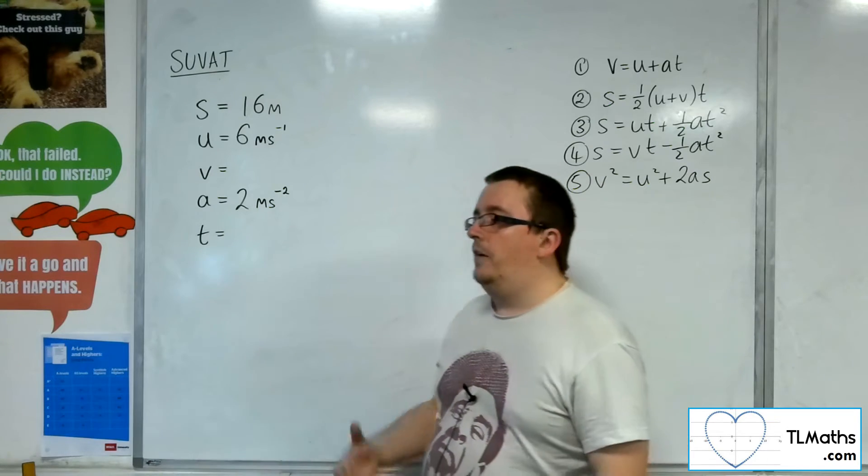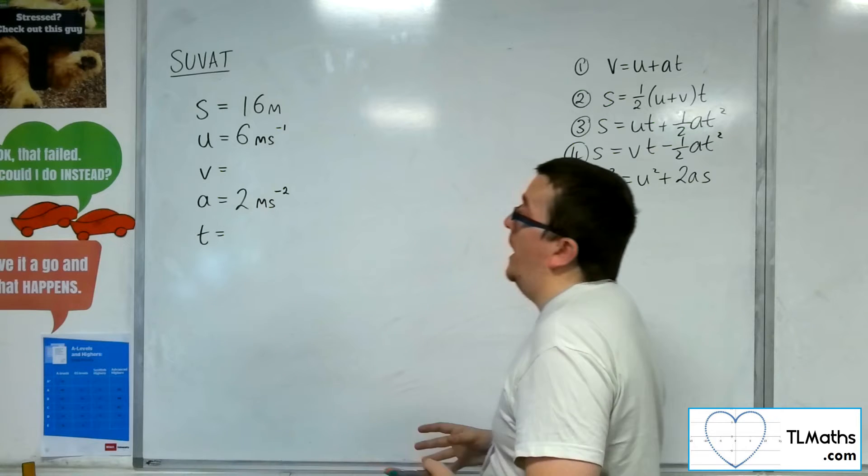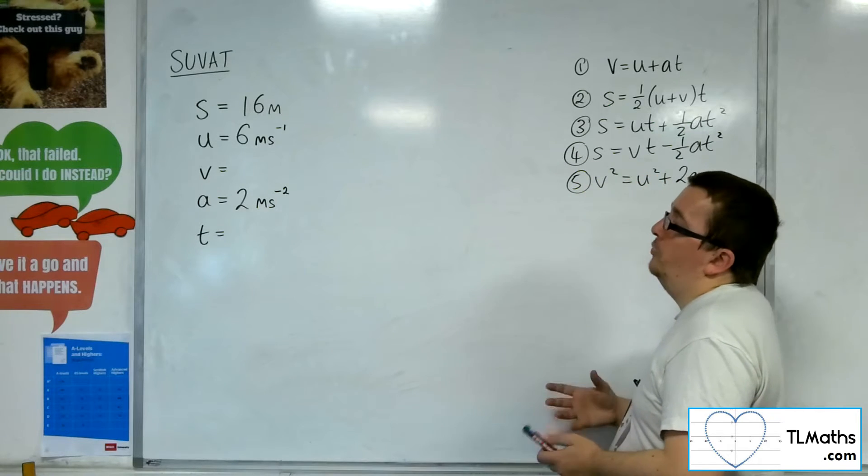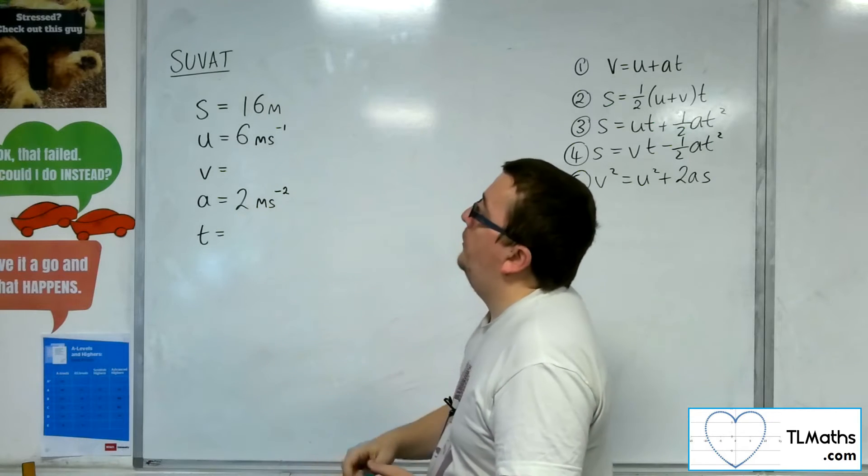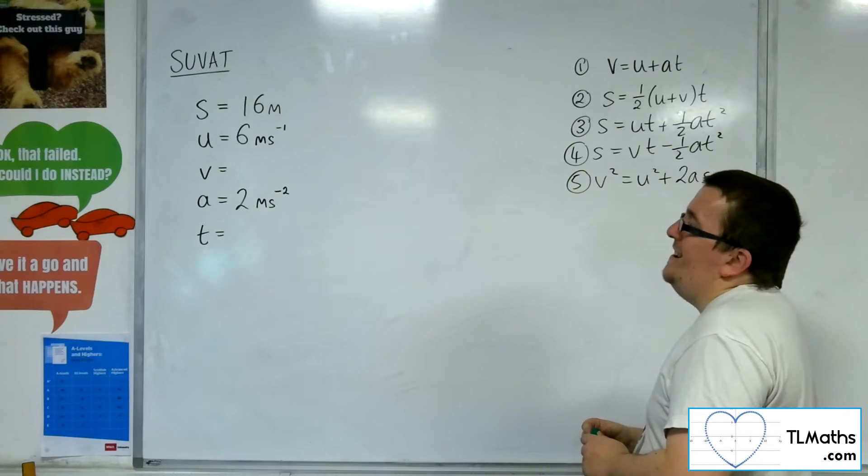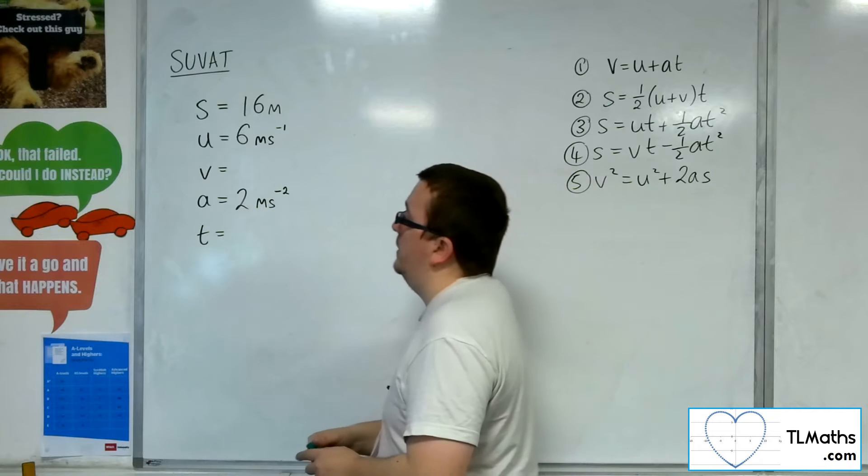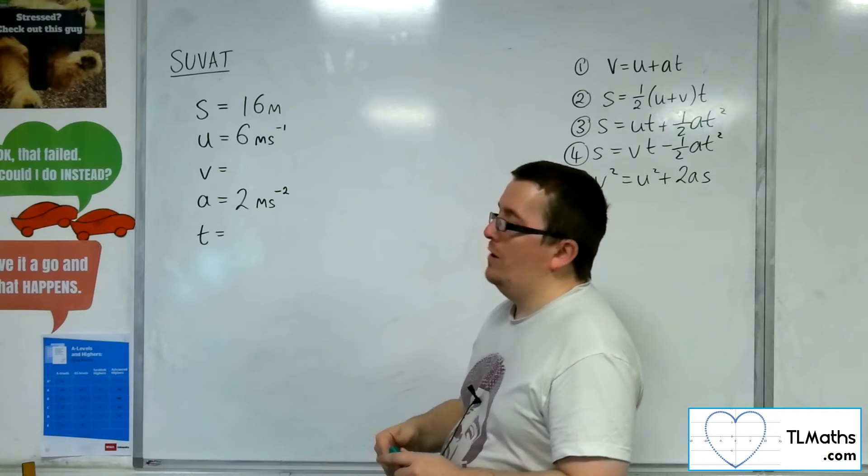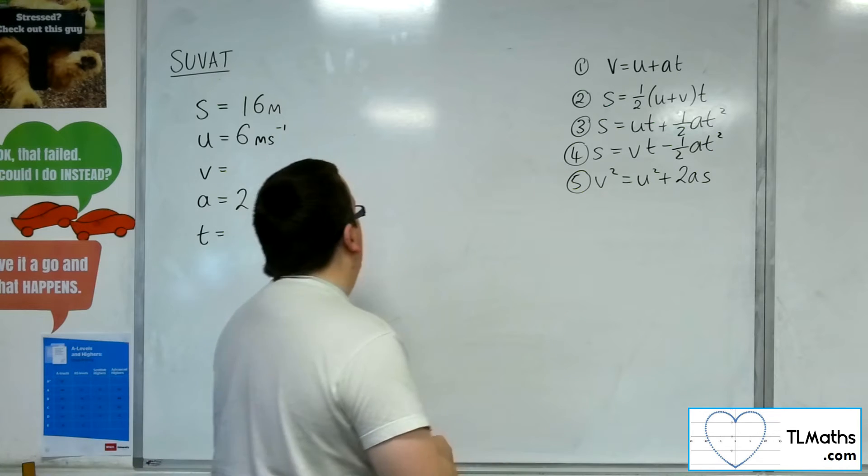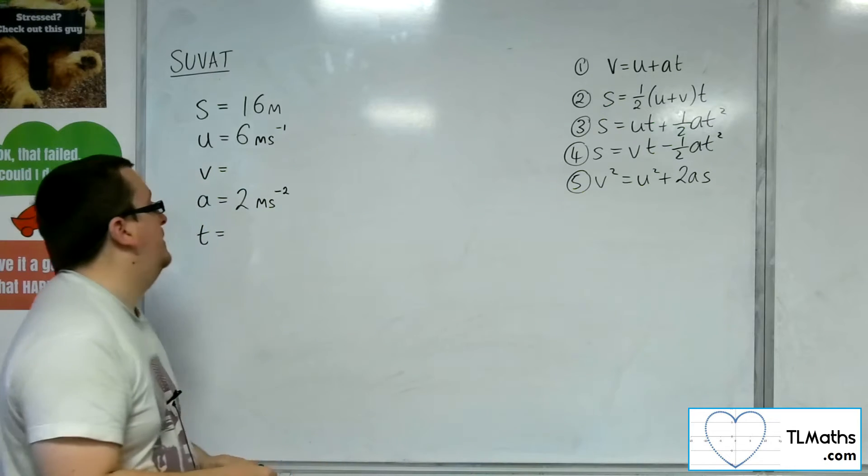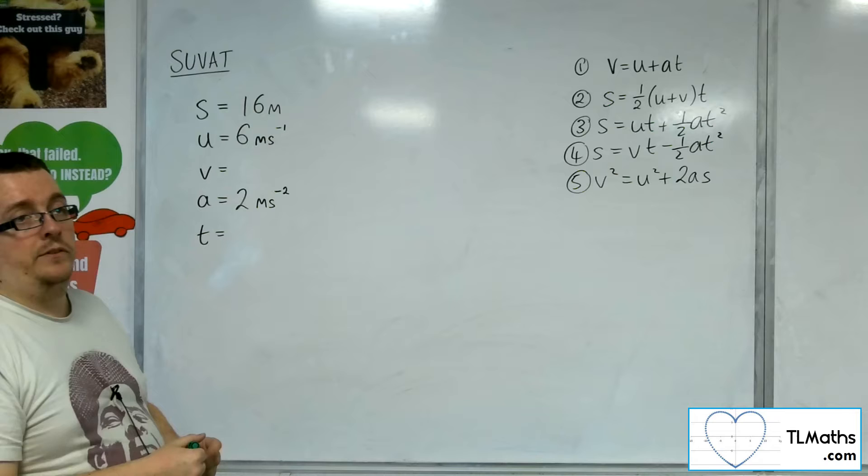So I've taken all the context out and I'm just going to tell you that in a particle's motion, it has a displacement of 16 meters, its initial velocity was 6 meters per second and it is accelerating at 2 meters per second squared. And I want to try and find v and t in these cases.